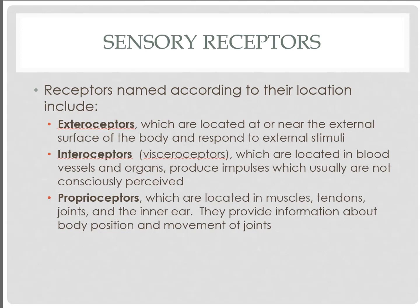Proprioceptors are all related to motion — kinesthesia, which promotes the study of human movement that we know as kinesiology. Proprioceptors are located within the skeletal muscle, including the inner ear. They provide information about our position in space and the movement of our joints, including the reflexes we learned previously from our muscle spindles, Golgi tendon organs, and a couple more.